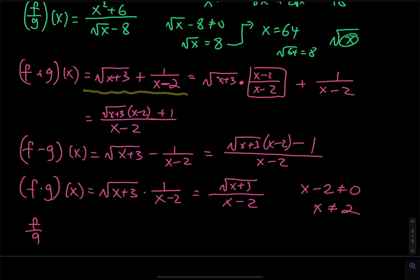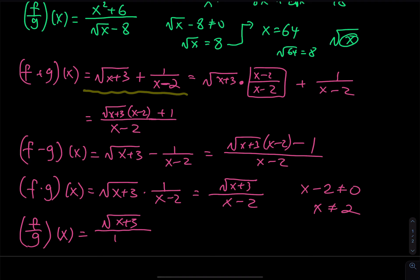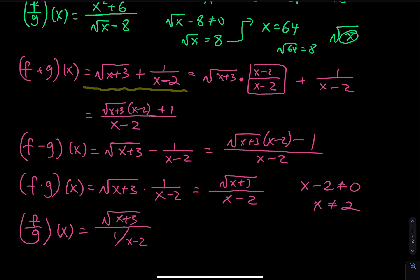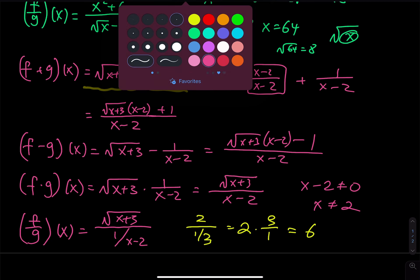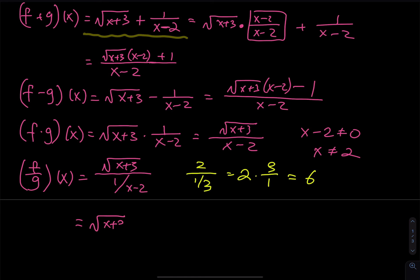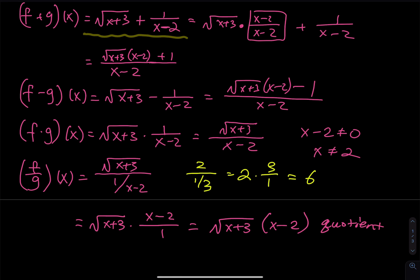For the division, f divided by g of x: you have the square root of x plus three divided by one over x minus two. Dividing by a fraction means multiplying by the reciprocal — swapping numerator and denominator. For example, two divided by one third equals two times three over one, which is six. So here, the result is the square root of x plus three multiplied by x minus two. This is the quotient, the previous one was the product, before that was the difference, and the first was the sum.